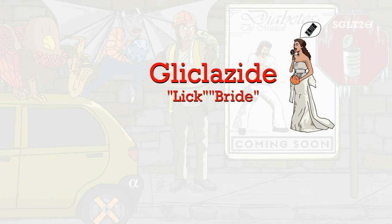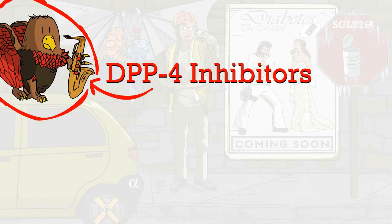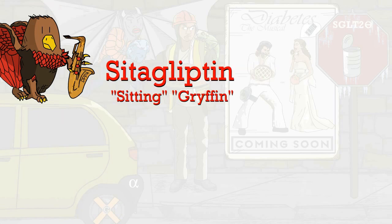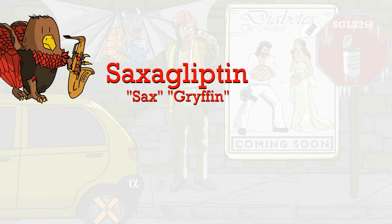Next are the dipeptidyl peptidase-4 inhibitors, or DPP-4 inhibitors. These are represented by the Gryphon, and the little inscription on the sacs helps you remember this. Examples include Sitagliptin, which is the sitting Gryphon, and Saxagliptin, which is the sacs Gryphon.